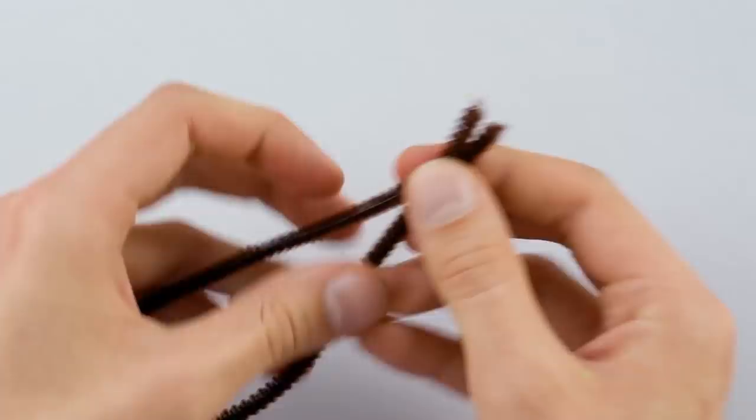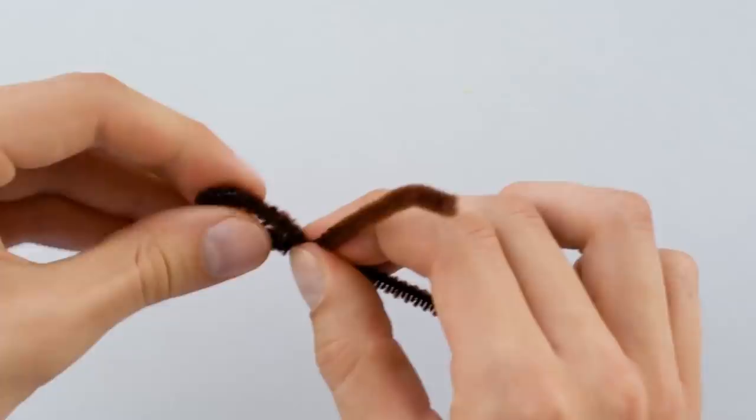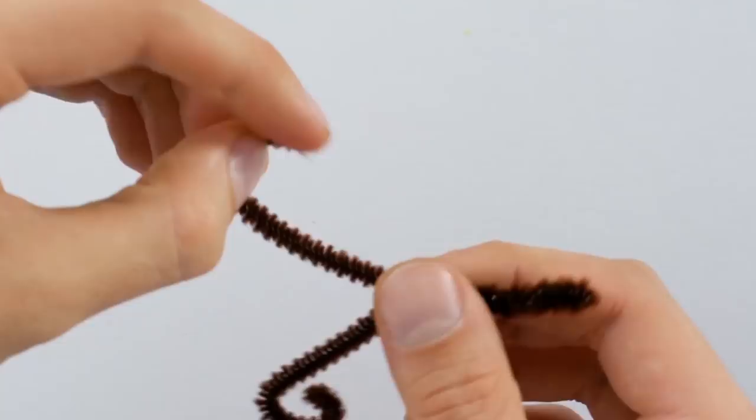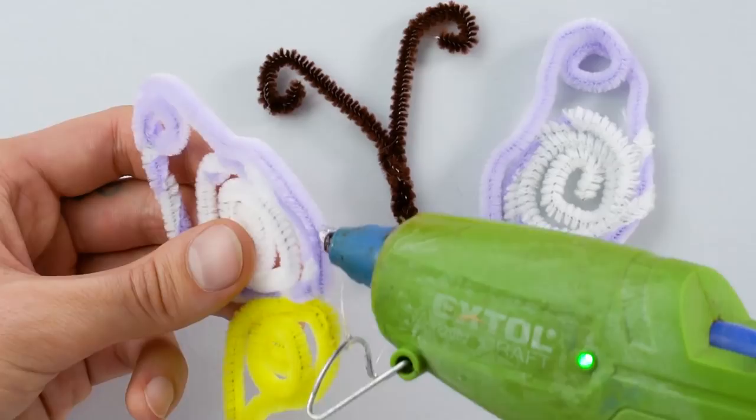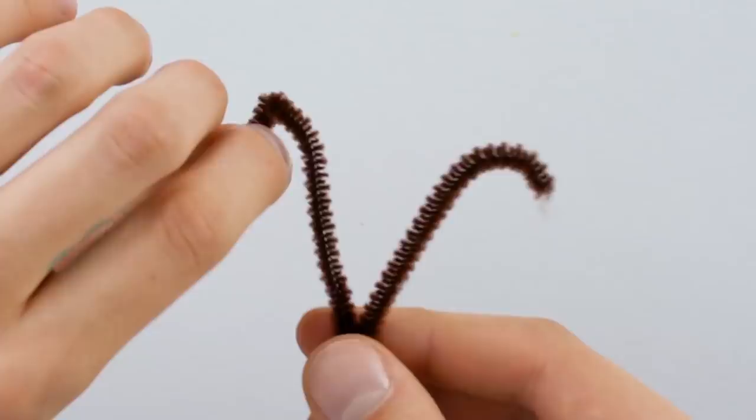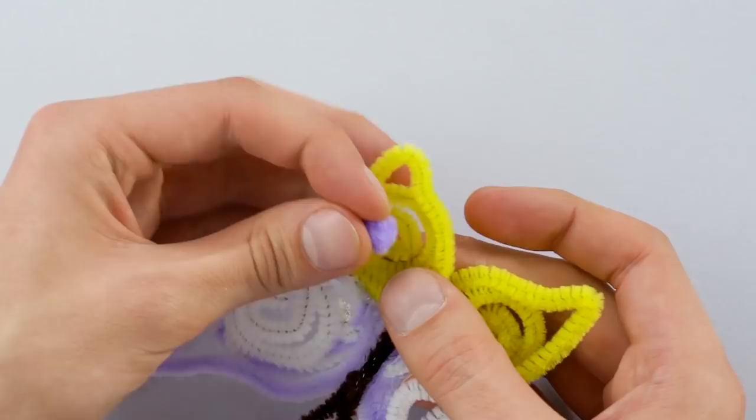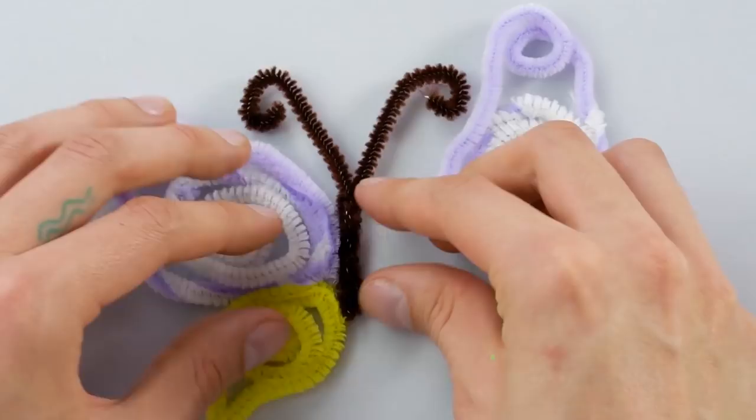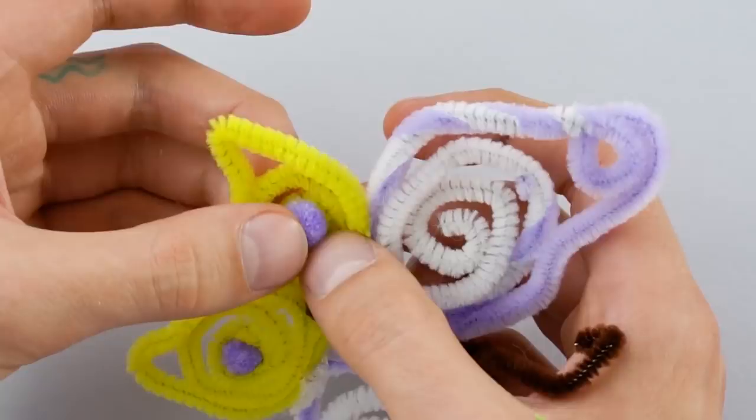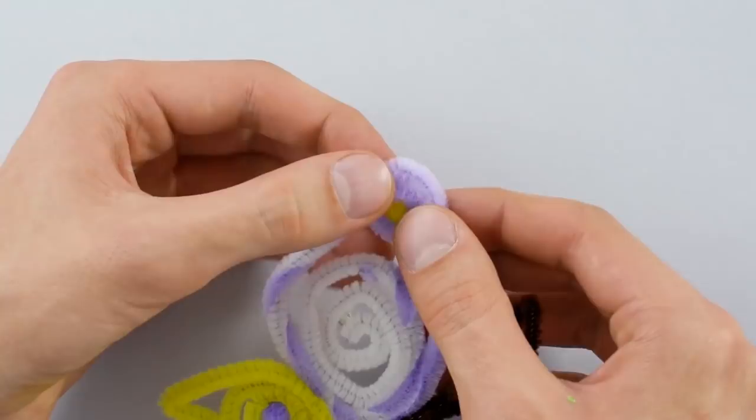Make the body and stem by folding the pipe cleaner in half and twisting it together. Fold the lower half up and twist some more. Form the antenna and glue the wings to the body. Add some pom-poms to give the wings some extra flair. Then, watch it flutter in the sky. Barbie loves her butterfly pet!